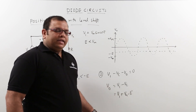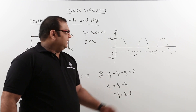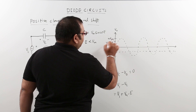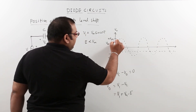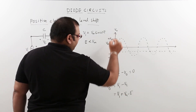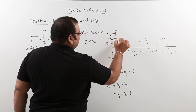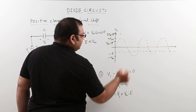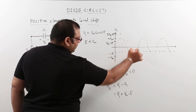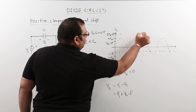So V0 equals Vi plus Vm minus E. When input is 0, output equals Vm minus E, which is the starting point of the waveform. When input is at positive peak Vm, the output goes to 2Vm minus E. When input returns to 0, output comes back to Vm minus E. When input is at negative peak minus Vm, the output goes to minus E.